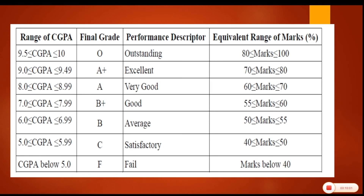This is the meaning of the grades: if you have got O grade it means outstanding; A plus means excellent; A means very good. Qualitatively, each grade signifies a different level of performance. If your CGPA falls below 5, you are failing.